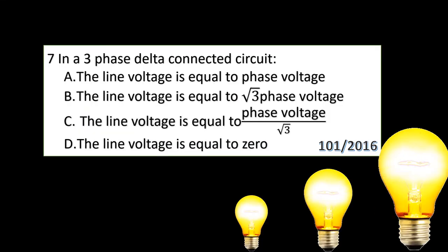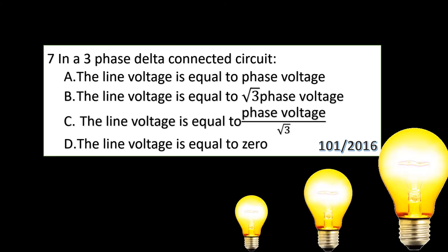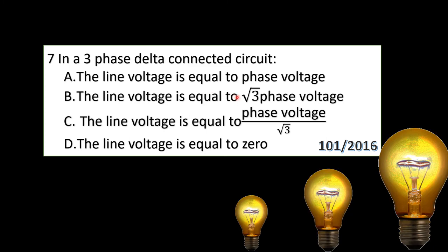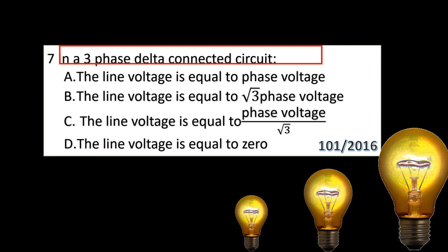Now we are going to write the question of a three-phase delta-connected circuit. The line voltage is equal to the line voltage.